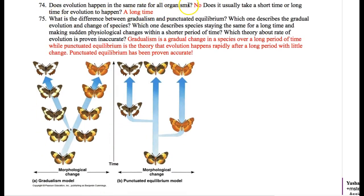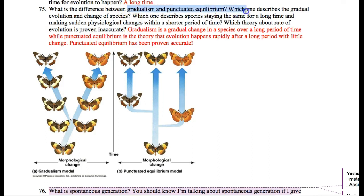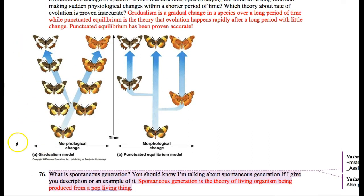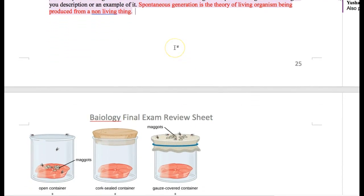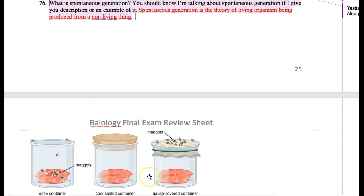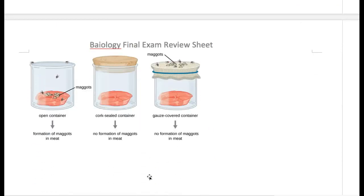Does evolution happen at the same rate for all organisms? No, things don't just happen the same way. Does it usually take a short time or a long time? Usually a long time. Gradualism says evolution happens gradually — things change slowly and gradually. But punctuated equilibrium says an organism stays the same for a long time, then changes very quickly, then stays the same for a long time again. Punctuated equilibrium is how evolution actually happens. Spontaneous generation is the theory that things can appear out of nowhere, which we know is not true.